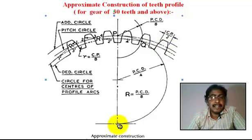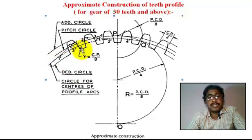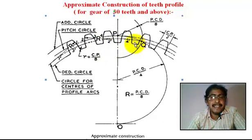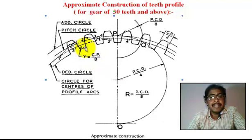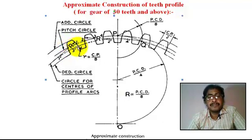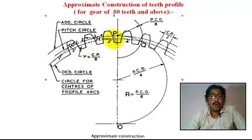With pencil compass pin at point O, we darken the dedendum circle portion. These edges — we fill them in. The radius small r is equal to CP (circular pitch) by 8. We take this radius CP by 8, and darken this portion, this portion, this portion for examination purpose.